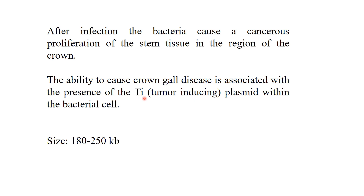How does this bacterium cause the tumour or crown gall disease? Because it has a plasmid called the tumour inducing plasmid. The size of this plasmid is very large — it contains a variety of genes responsible for virulence and oncogenes for the proliferation of cells and progression of cancer. The size is mainly 180 to 250 KB.